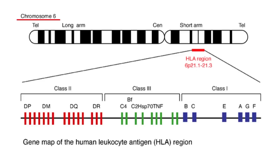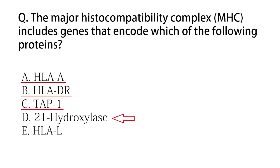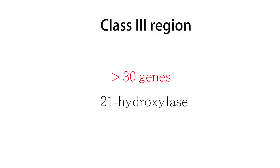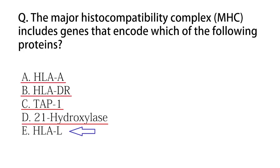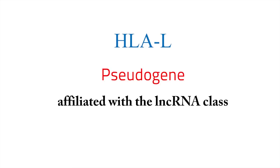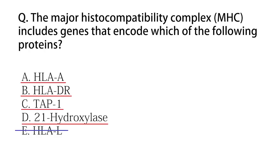Looking at these images, we can find that most of the options given in the question are proteins encoded by the MHC. In option D, the protein 21-hydroxylase is encoded by the MHC class three genes, which lie between the class two and class one region. The last option, HLA-L, is a pseudogene affiliated with the lncRNA class. So the proteins encoded by MHC genes are HLA-A, HLA-DR, TAP1, and 21-hydroxylase — but not HLA-L.